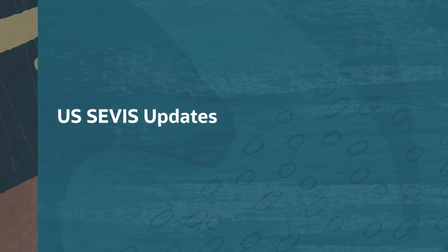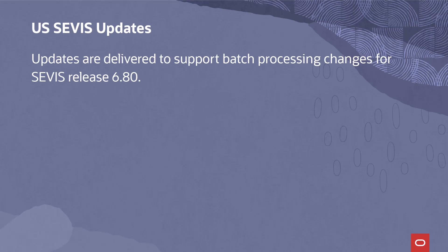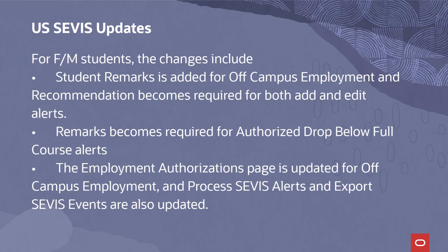U.S. SEVIS Updates are delivered to support batch processing changes for SEVIS Release 6.80. For FM students, the changes include: Student Remarks is added for Off-Campus Employment, and Recommendation becomes required for both Add and Edit Alerts. Remarks becomes required for Authorized Drop Below Full Course Alerts. The Employment Authorizations page is updated for Off-Campus Employment, and Process SEVIS Alerts and Export SEVIS Events are also updated.